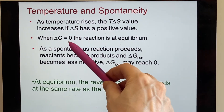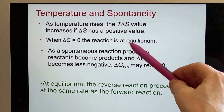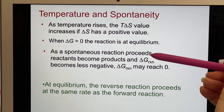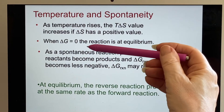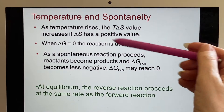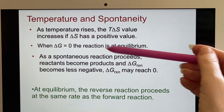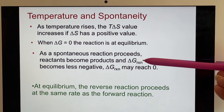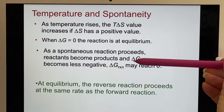When ΔG equals zero, the reaction is at equilibrium — that's when ΔH is exactly equal to TΔS. As a spontaneous reaction occurs, the reactants are becoming products. ΔG of the reaction can become less negative, reach zero, and so the reaction can stop in the middle.